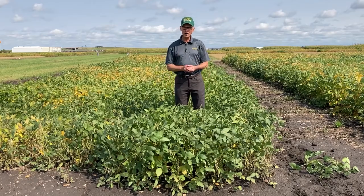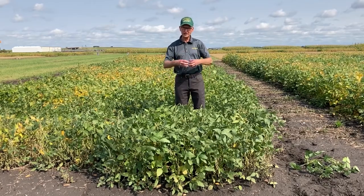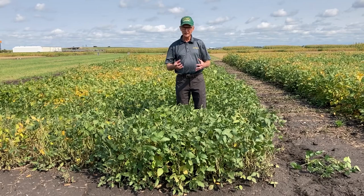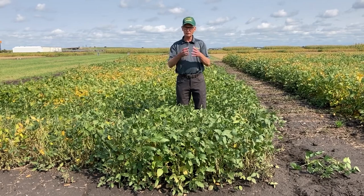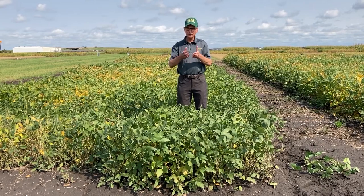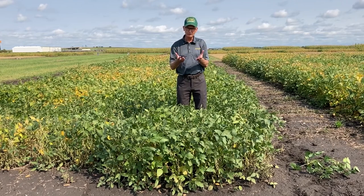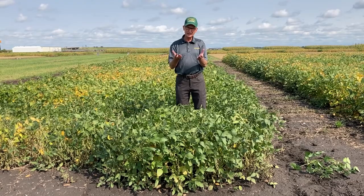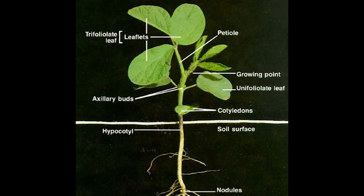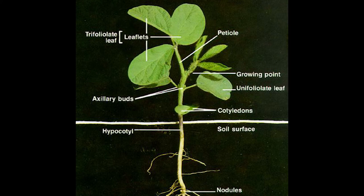When we put the seed in the ground it first swells and starts to take up moisture, and after a few days it will start to germinate. As the seed comes out of the ground it will have the first part called the cotyledons. After the cotyledons we get two other leaves called the unifoliates, and after the unifoliates we get the true leaves — a trifoliate, with three parts of the leaves attached.